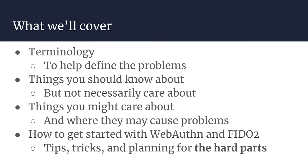To help you define those problems, I'll go through some of the terminology associated with WebAuthn and FIDO2 — what is FIDO2, what is WebAuthn. We'll cover things you should know about, and some things you don't need to care about right now, especially if you're doing a speedy implementation. We'll also talk about things you actually might care about — those cause problems. Finally, we'll talk about how to get started and the tricks for planning around the hard parts in your implementation so they don't slow you down.